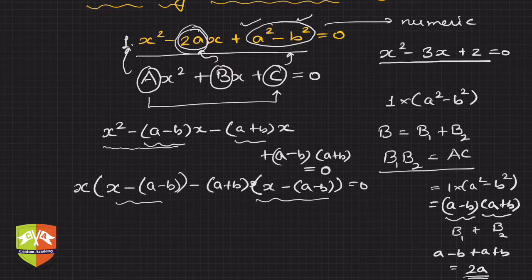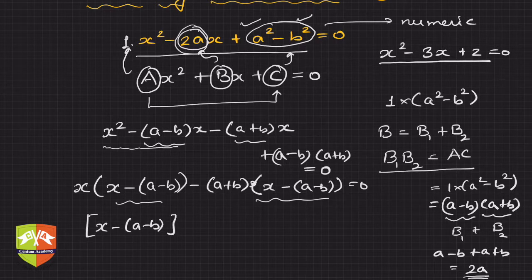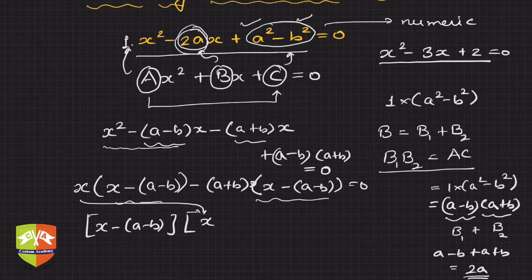Thankfully we have another set of common factors here, so you can pull that out. Within brackets this x will come here and this thing will come here, so [x - (a - b)][x - (a + b)] = 0.